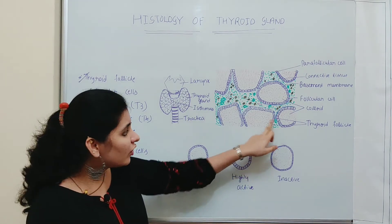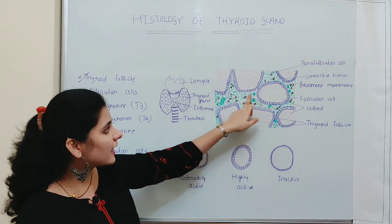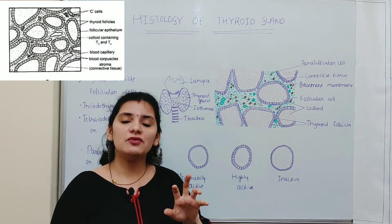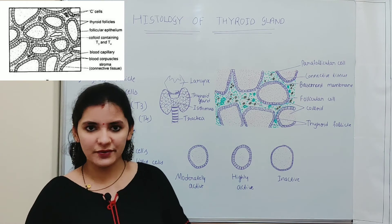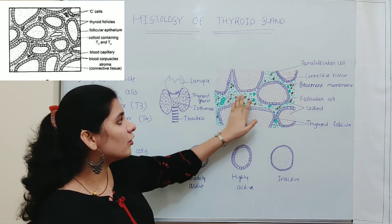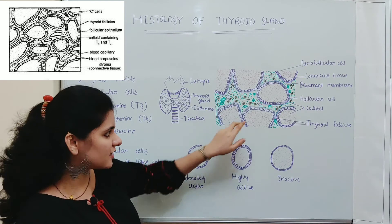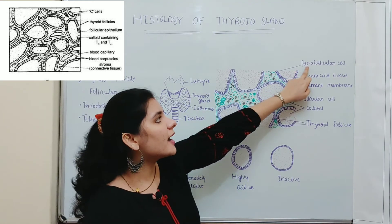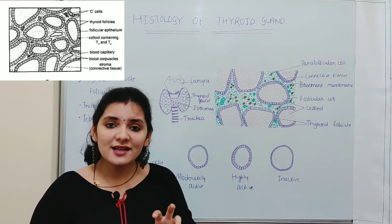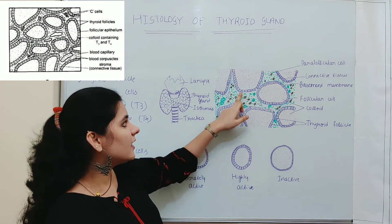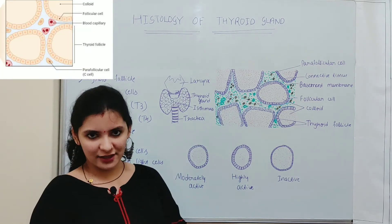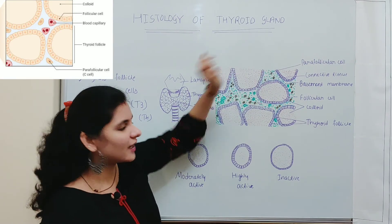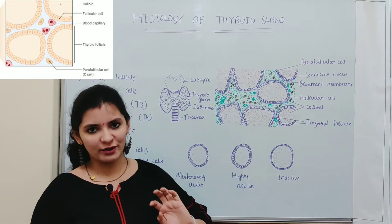Between the thyroid follicles, as you can see in this diagram, there is a connective tissue stroma containing blood vessels, lymphatics, and nerve vessels. Apart from that, this inter-follicular connective tissue has specialized cells known as parafollicular cells. Parafollicular cells may also be present between the basement membrane and the follicular cells which make up the thyroid follicle.